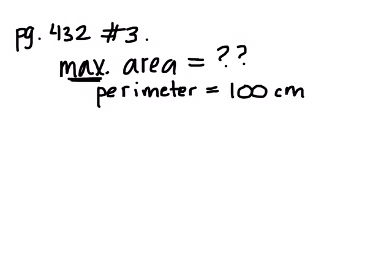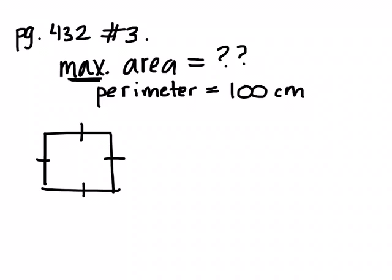It's going to be a square — that's what we just discovered. The shape that produces this is a square. If you're given the perimeter of 100 centimeters, can you figure out the dimensions of the shape knowing that it has to be a square? We could do 100 divided by 4, because we know that a square has 4 equal sides. What's 100 divided by 4? 25 centimeters.